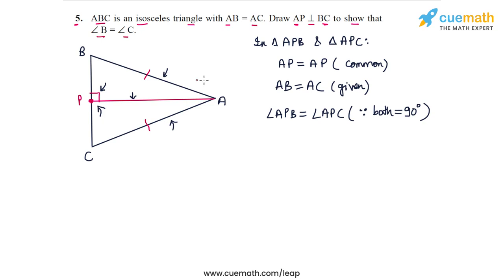What do we have? We have two triangles APB and APC in which one side is common, the hypotenuses are equal, and both triangles are right-angled. Hence we can apply the RHS congruence criterion to claim that the two triangles are congruent.